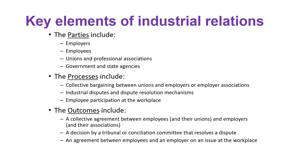The key elements of industrial relations involve the stakeholders: employers, employees and their respective associations — unions, professional associations — and government and state agencies. The process includes collective bargaining between unions and employers, industrial disputes, and dispute resolution mechanisms. Outcomes include collective agreements between employees and employers, decisions by tribunals or arbitration committees, and workplace agreements.